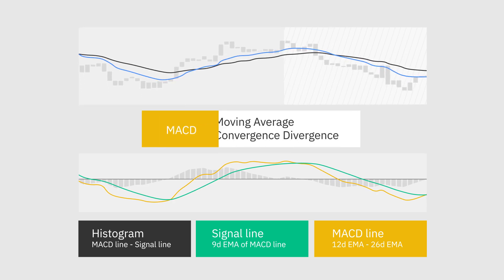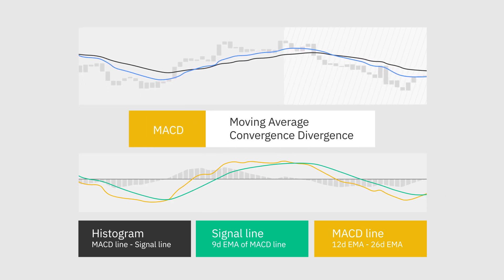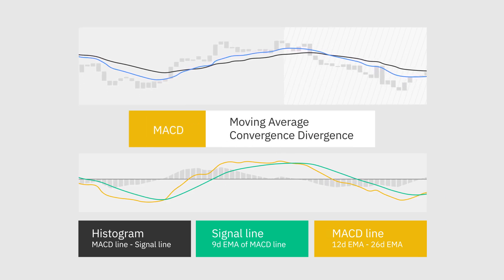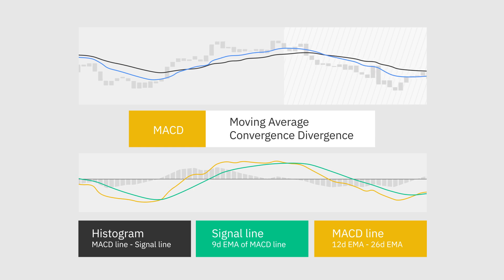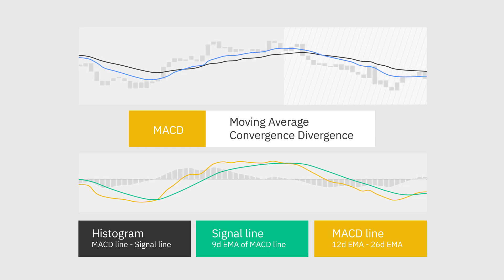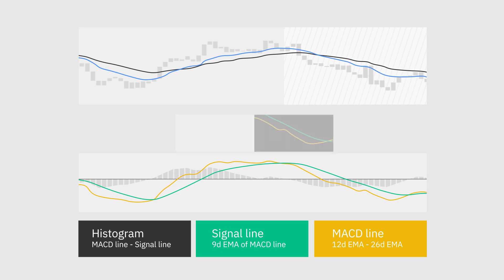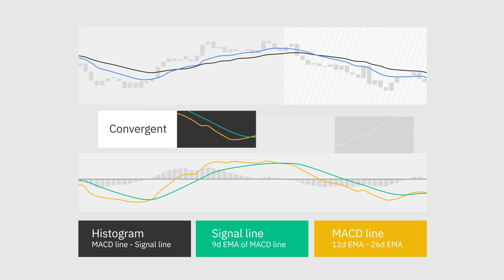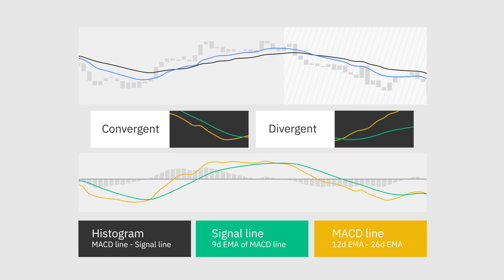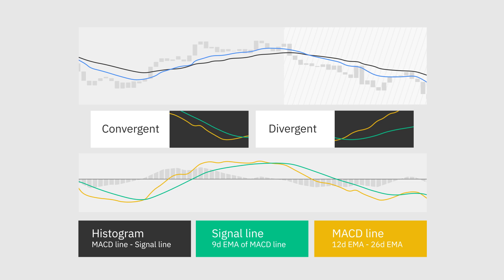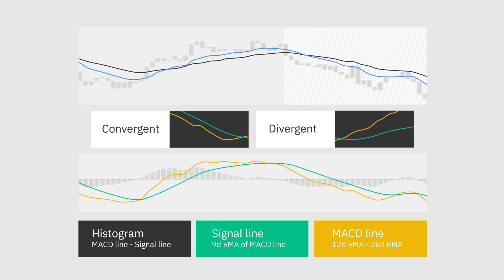As the name suggests, the Moving Average Convergence-Divergence indicator tracks the relationships between moving averages, and the correlation between the two lines can be described as either convergent or divergent — convergent when the lines gravitate toward one another, and divergent when they move apart.